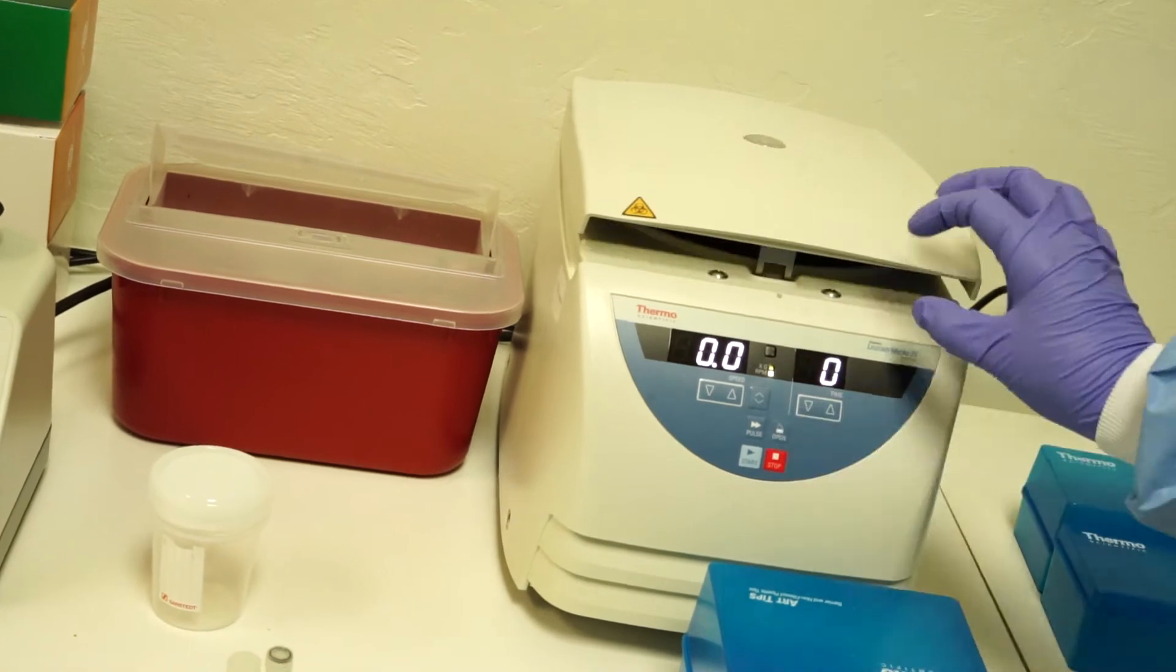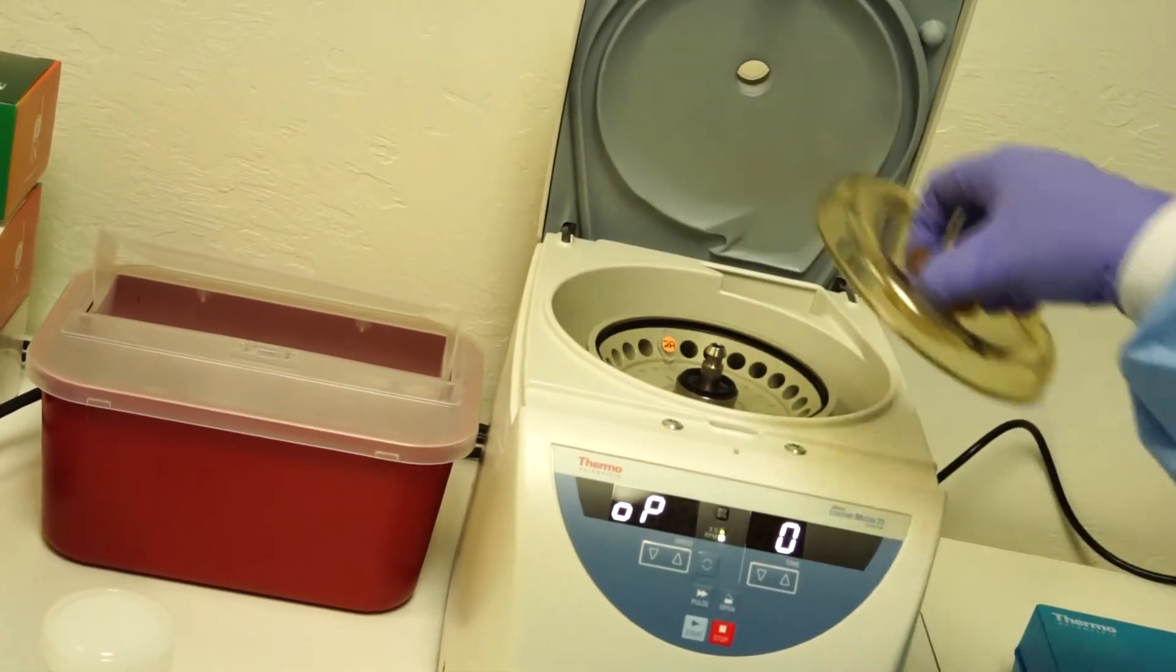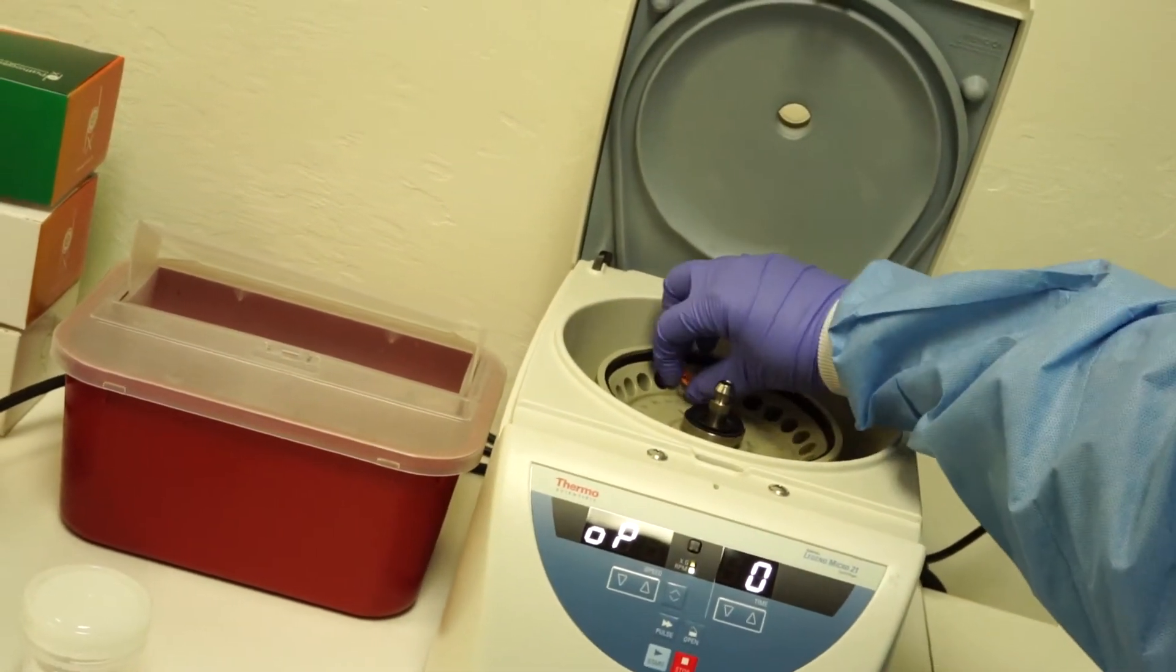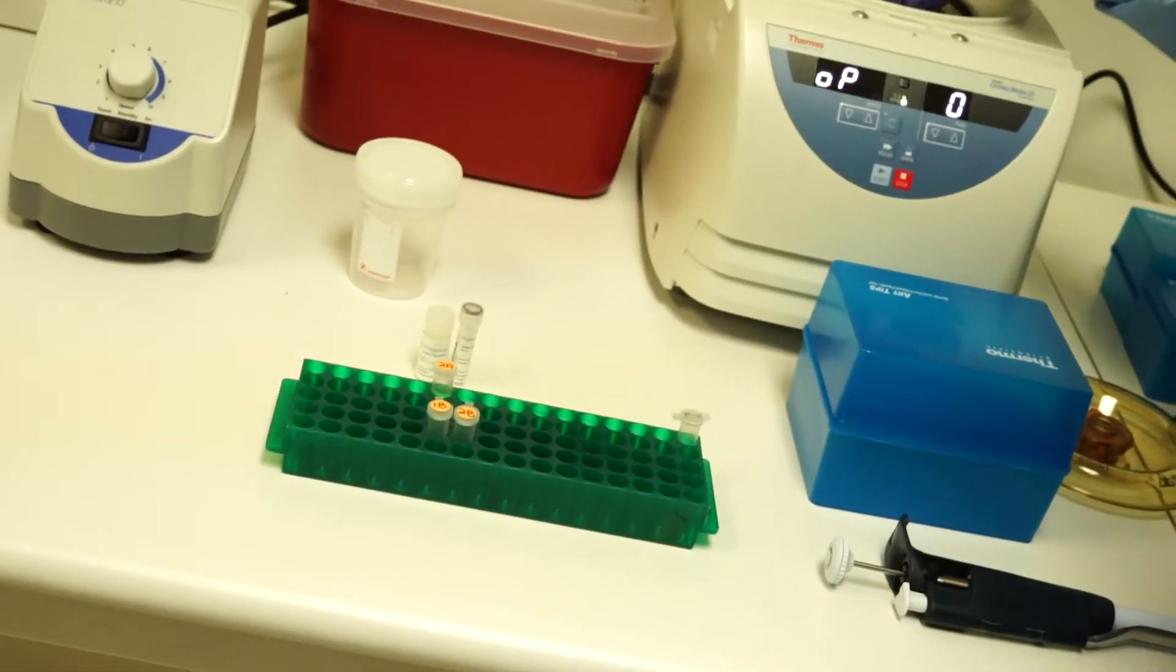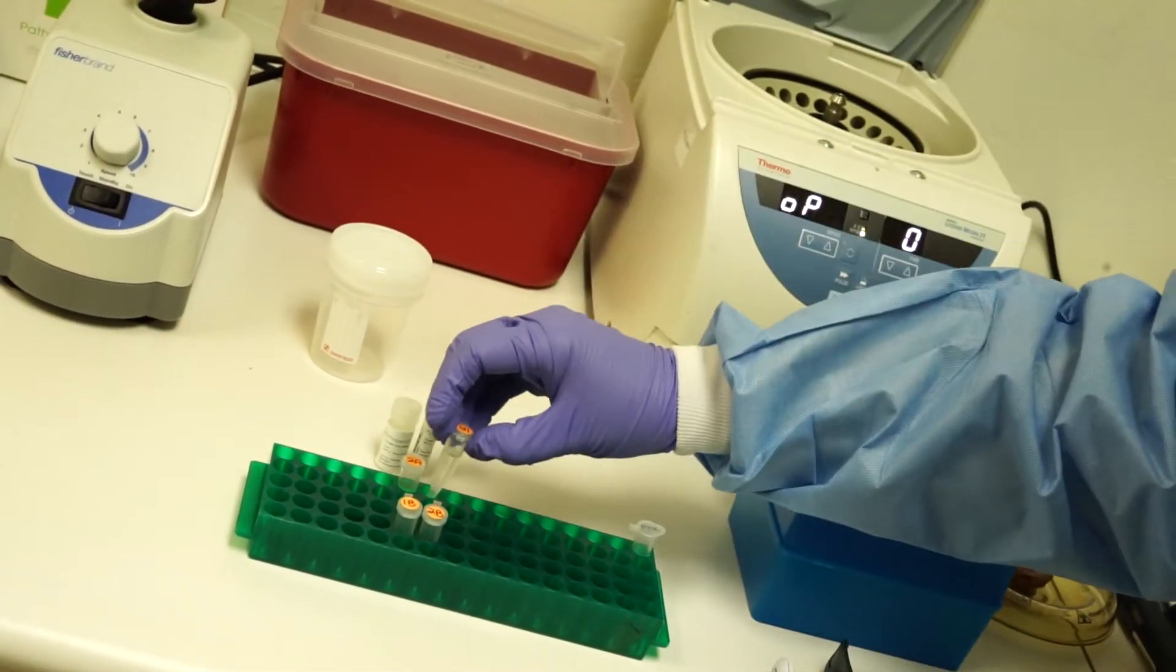Once the samples have centrifuged, remove the samples and retain the supernatant. You should have a clean 1.5 ml tube ready for the transfer.